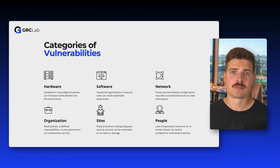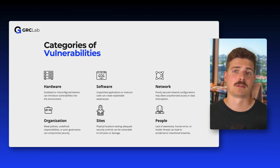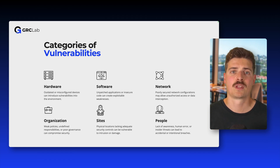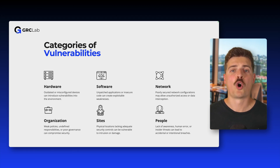Vulnerabilities aren't just found in computer systems. They can also be in organizational structures, like how well people within the organization communicate, or the location of physical premises. They might also come from outside the organization, like if the organization relies too much on certain suppliers or utilities.